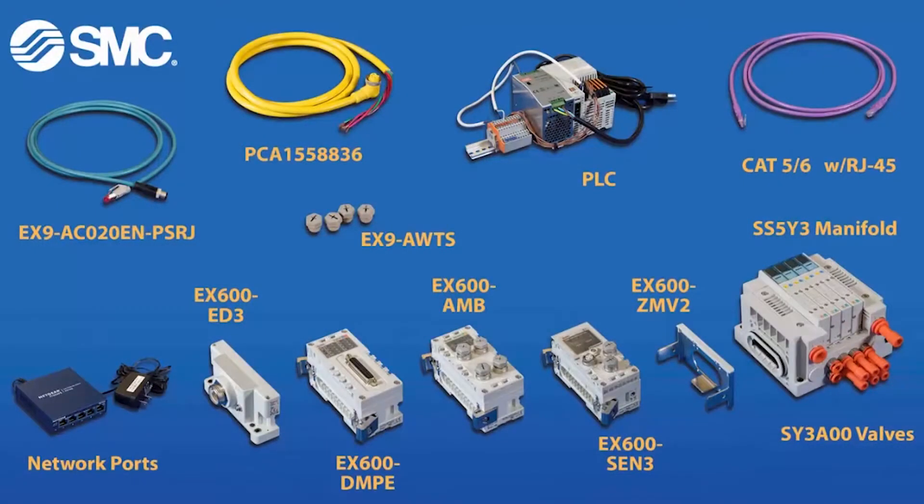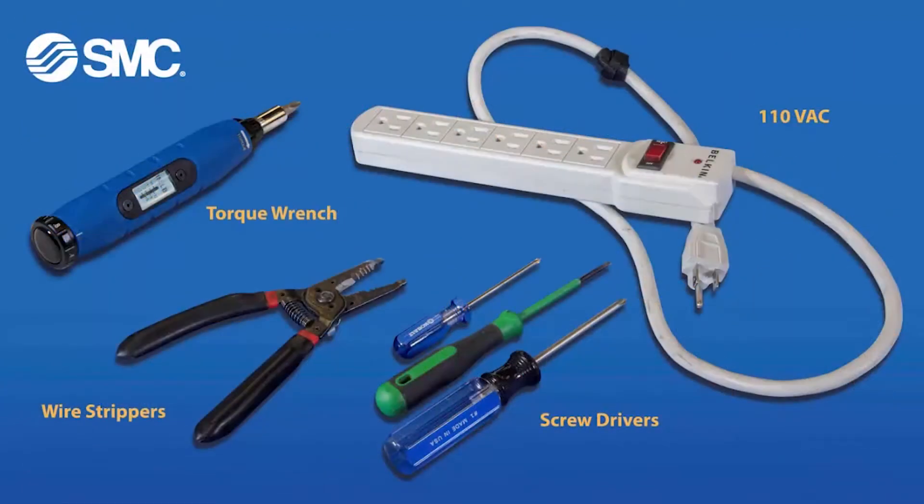These are the parts and part numbers that you will need in order to connect your Ethernet IP EX600 to your PLC. These are the tools that you will need to hook everything up.